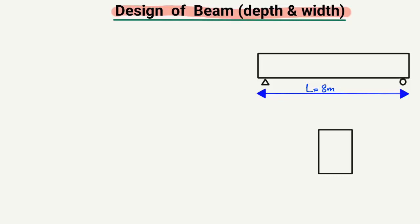According to the ACI code — American Concrete Institute 318-14 — we can find the minimum depth and width of the beam when the length of the beam is known to us. Here is a simply supported beam where the length of the beam is 8 meters. So what is the depth and what is the width of this beam?